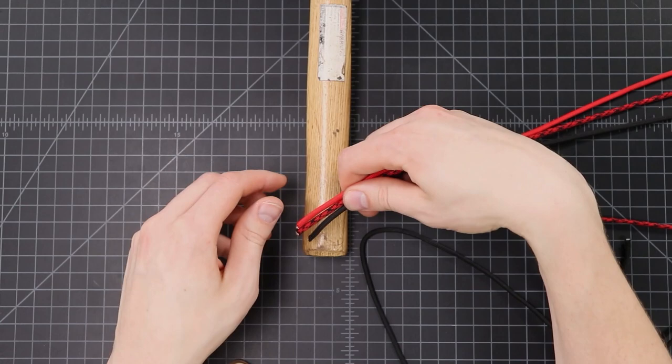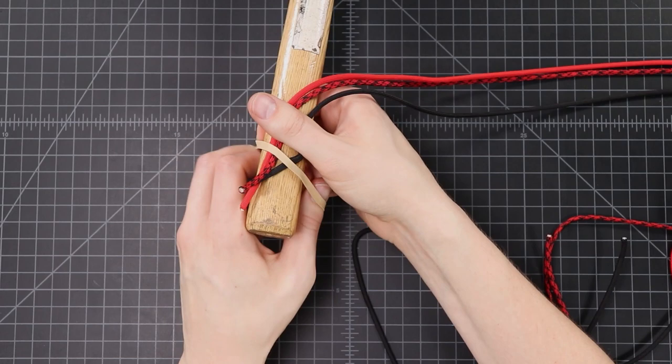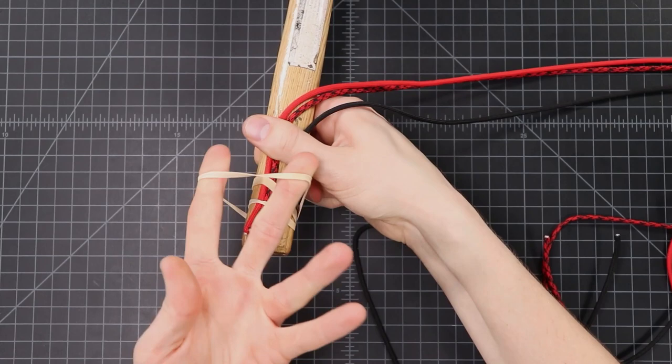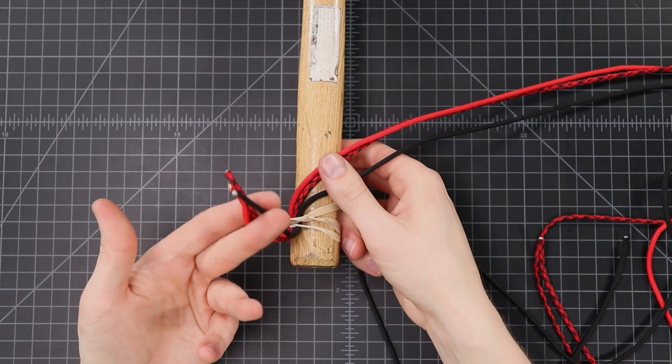Start by taking all three ends of your cord and we're going to rubber band them to the end of our handle. Then we're just going to pull our cord through a little ways for some extra slack so we keep our options open when deciding how to secure the end after we're done.